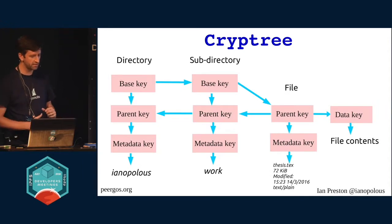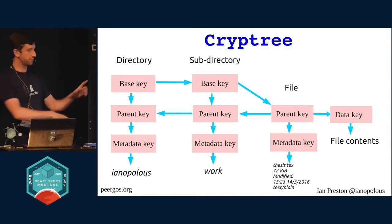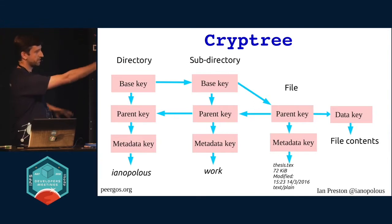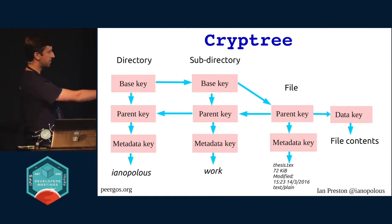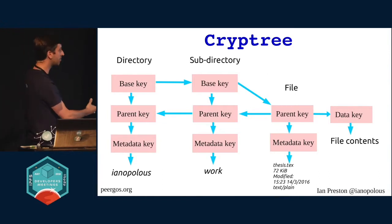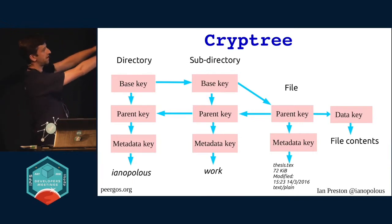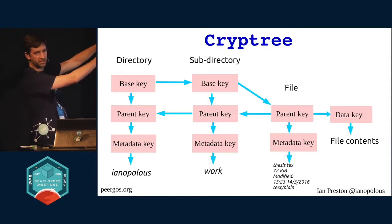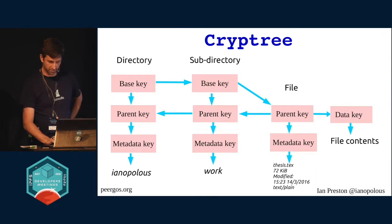This is what Cryptree looks like. There's a bunch of boxes representing keys. The first column is directory, then subdirectory, and then there's a file. If I grant the file's parent key to someone, they can read both the properties and the contents of that file. The parent keys go backwards — that just means everything has a well-defined global path. But if there was another file in the same directory, that person wouldn't be able to tell anything about it. So it's very fine-grained access control.